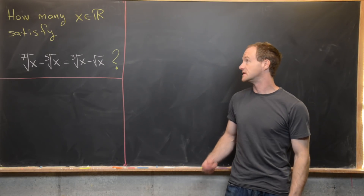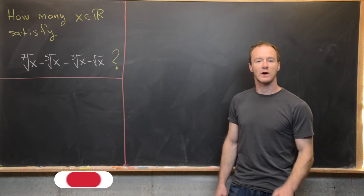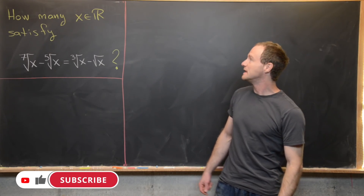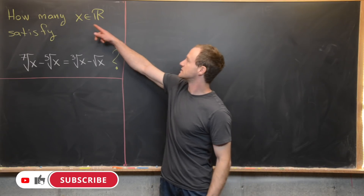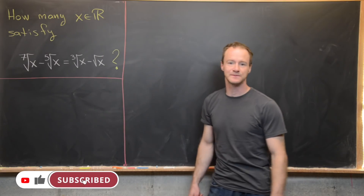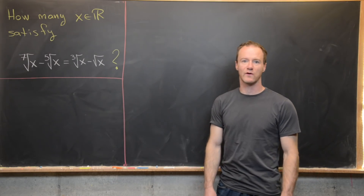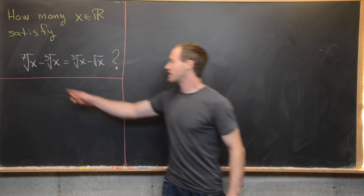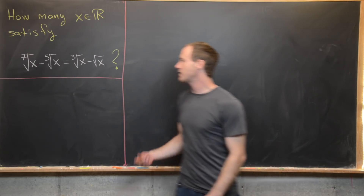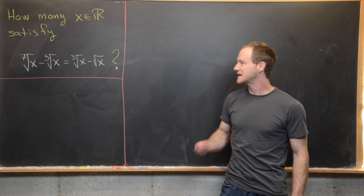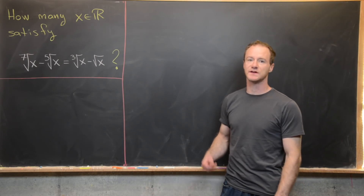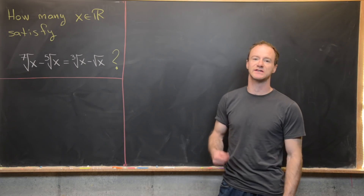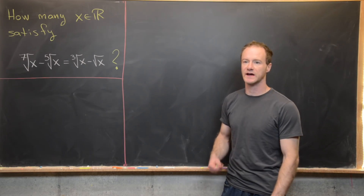I've got a nice little problem for you guys today. Our goal is to find out how many real numbers x satisfy the following radical equation: the seventh root of x minus the fifth root of x equals the cube root of x minus the square root of x.